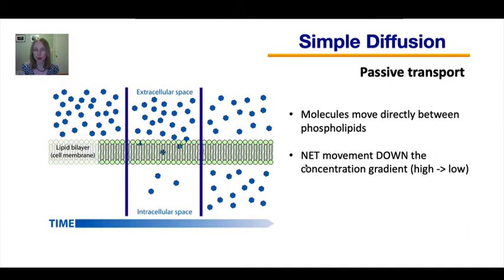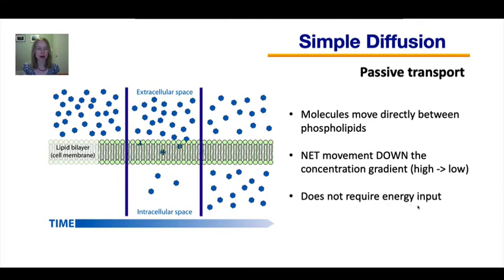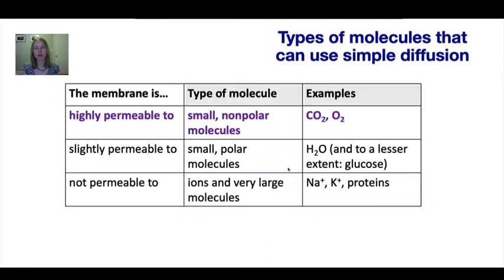You already learned about diffusion before, so I'd like to ask: do you remember what net movement means? We'll discuss it in class. This type of transport does not require an energy input — that's why it's called passive.